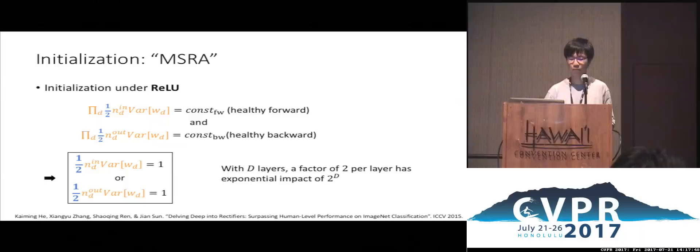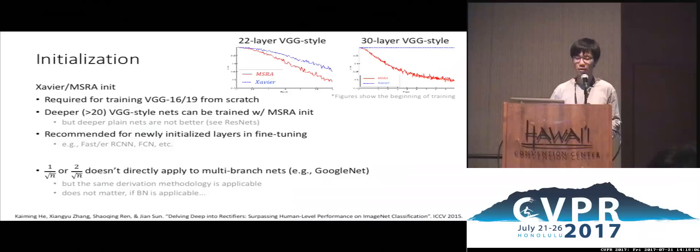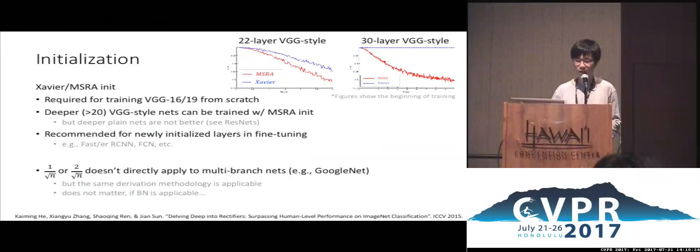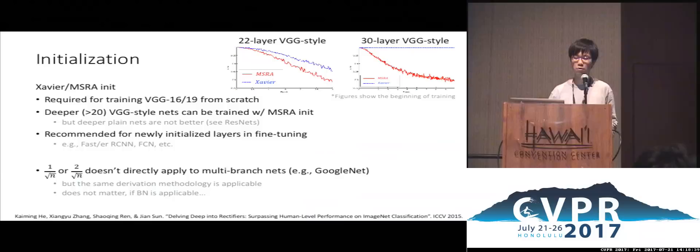This exponential effect is very prevalent in deep neural networks if not handled correctly. Xavier or MSR (MSRA/He) initialization are required for training VGG-16 or VGG-19 from scratch. For even deeper VGG-style networks (e.g., 20+ layers), MSR initialization is needed. Unfortunately, with many layers, plain networks usually are not better — this is why we need ResNet. These initializations are still useful for fine-tuning, such as for detection or segmentation where newly initialized layers are present.